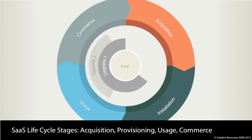Today we're going to be discussing the SaaS lifecycle and why it's essential that you optimize for your survival. Your application is in the middle of this diagram and ideally broken into modules of progressive functionality that can be added on by customers. The SaaS lifecycle are the business processes and activities that surround your core application and fall into four categories of acquisition, installation or provisioning, usage, and commerce.